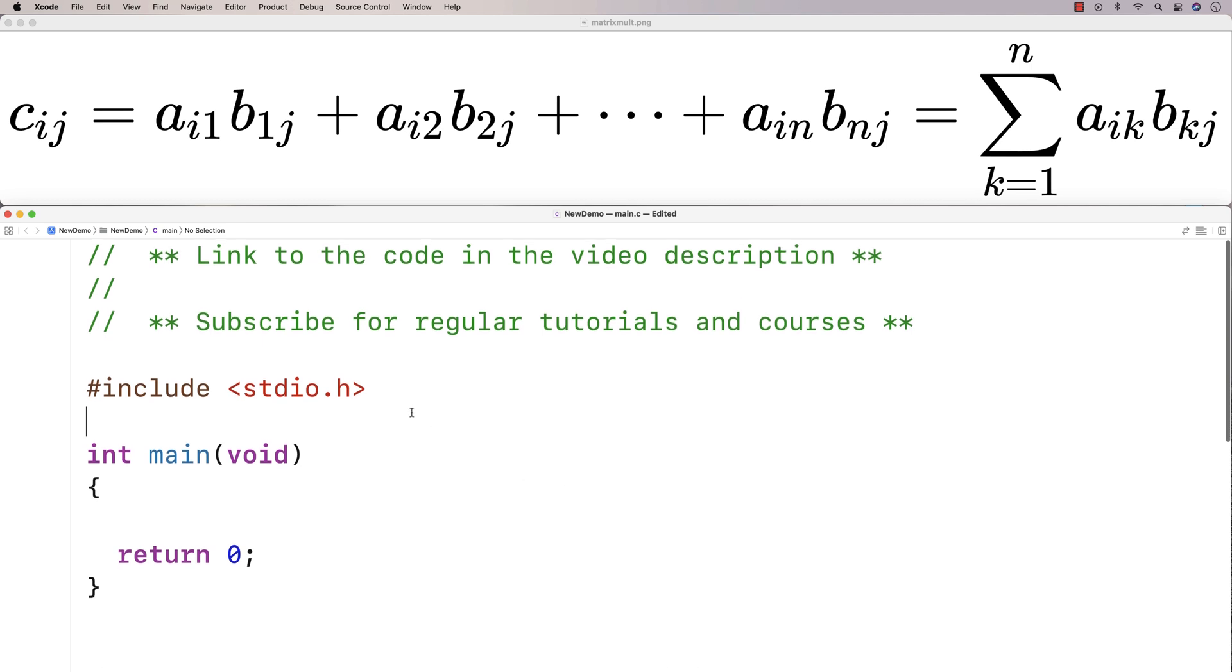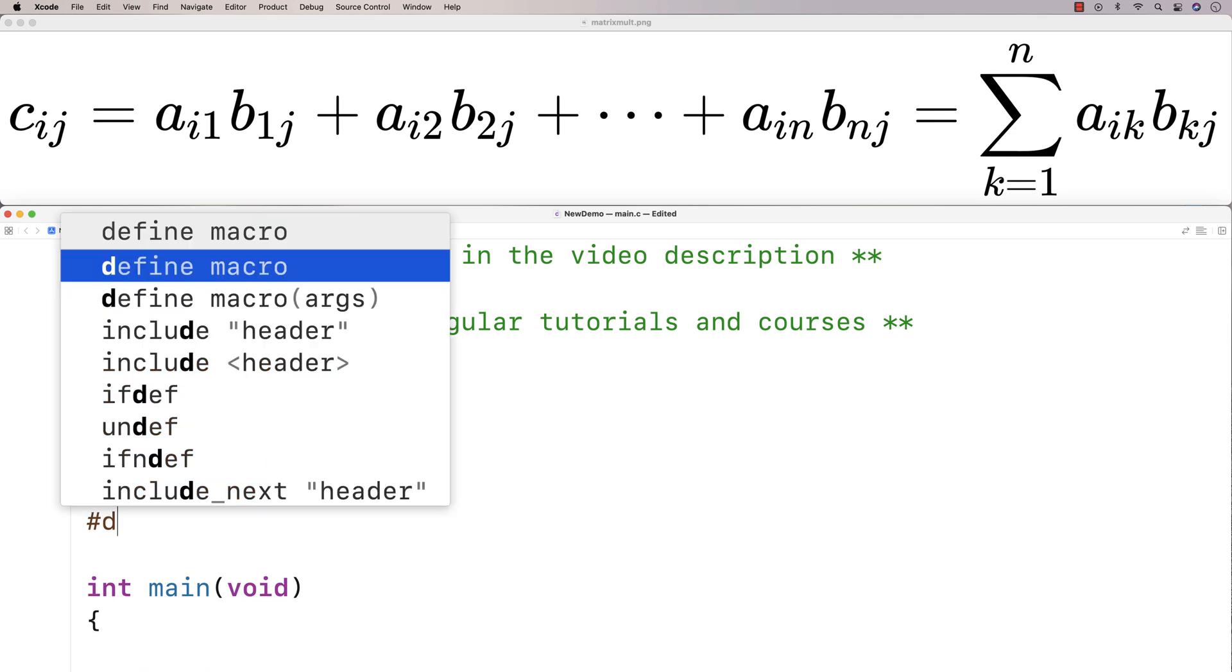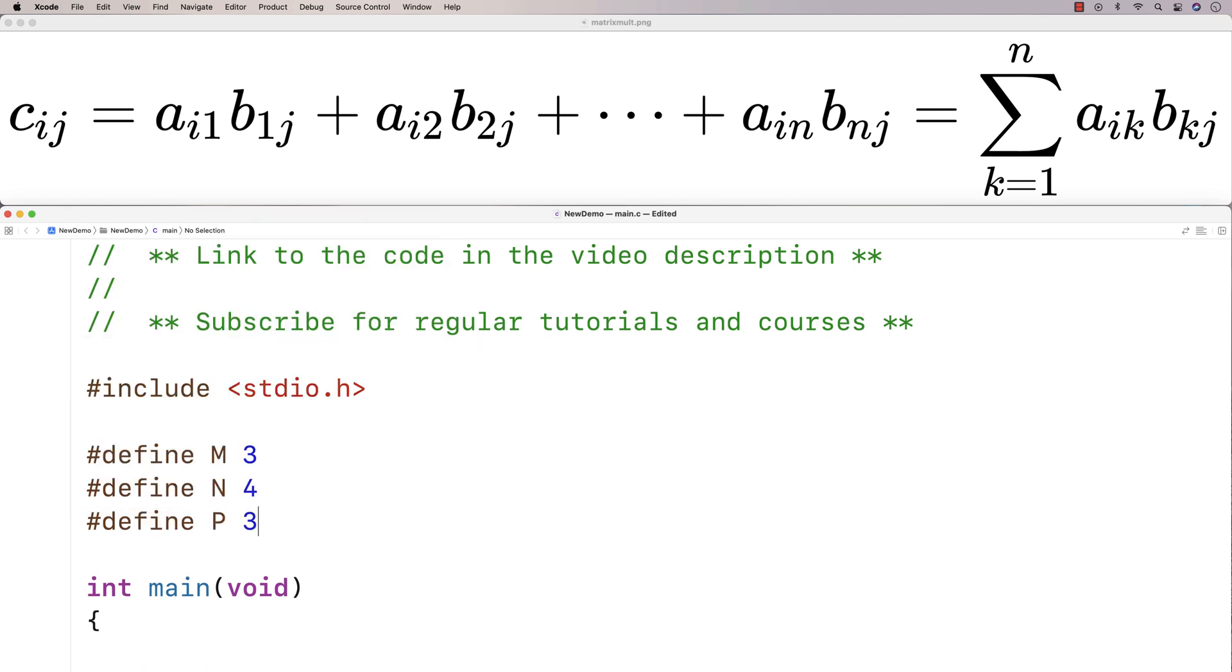So the first thing we're going to do is define constant values for the dimensions of our matrices. So here I'll say #define M 3, #define N 4, and #define P 3. And we'll actually use 2D arrays to represent our matrices.